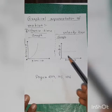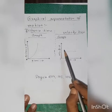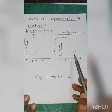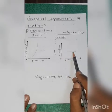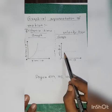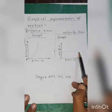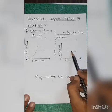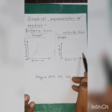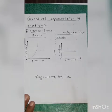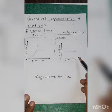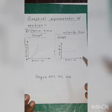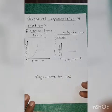Here the velocity-time graph is a straight line parallel to the time axis. This type of graph tells us that the motion of the body is uniform — no change of velocity is taking place. So we can say that initial velocity is equal to final velocity. In that case, acceleration will be zero.